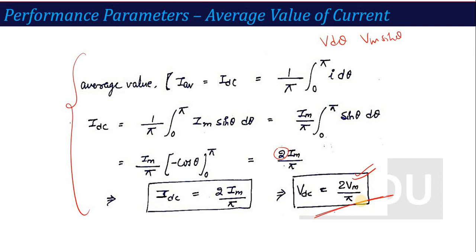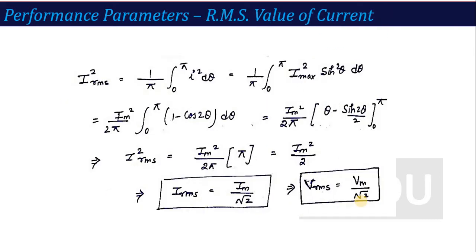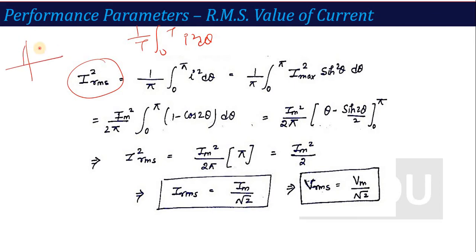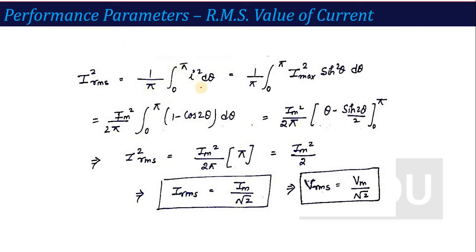The next performance parameter is the RMS value of current. The formula is the square root of 1 over T, integrated from 0 to T, of i² dθ. In the full wave rectifier, the complete cycle runs from 0 to π, so the time period T is π. Replace i with Im sin θ and proceed to calculate.